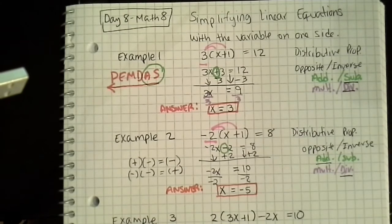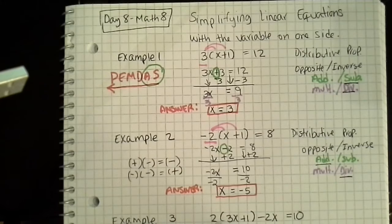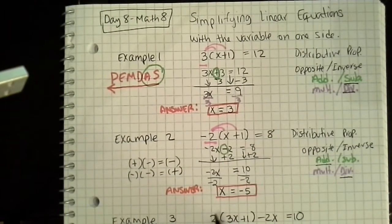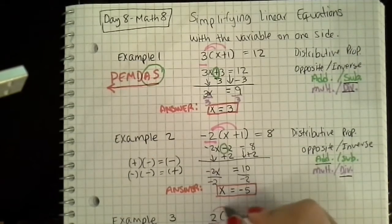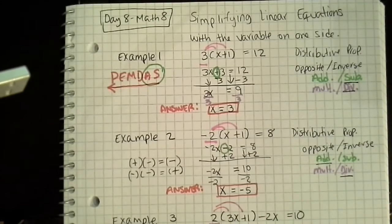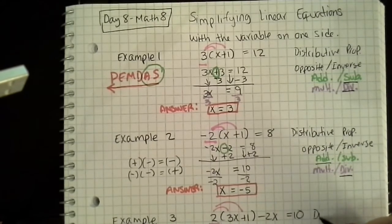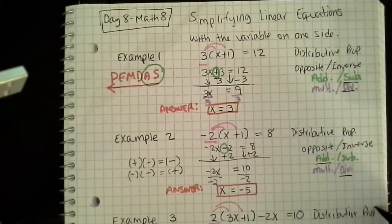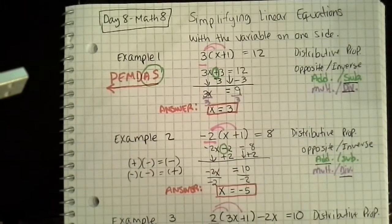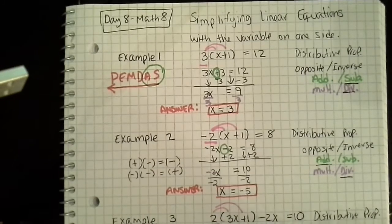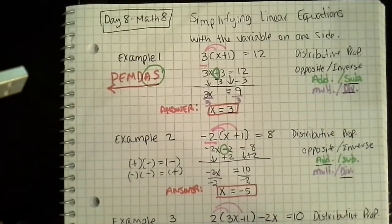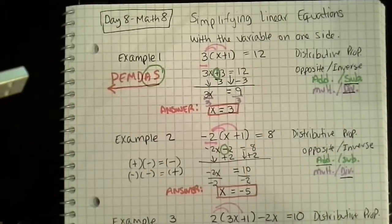Moving on to example 3, we have 2 as a multiplier, and that has to be distributed inside the parentheses and multiplied by 3x and a positive 1. So here's my multiplier, 2. Multiply that times each one of the terms. And again, what am I using? I'm using the distributive property. So that gives me 6x — 2 times 3x is 6x — plus positive times a positive is a positive.